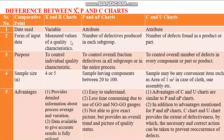For X-bar and R charts, the form of input data is measurable values of a quality characteristic — anything measured with precision measuring instruments. Whereas for P and NP charts, the input is the number of defectives produced in each subgroup, and for C and U charts, it is the number of defects found in one product.